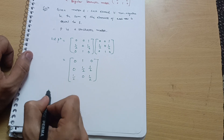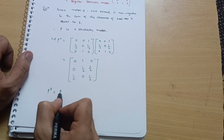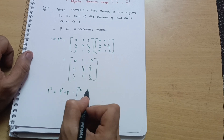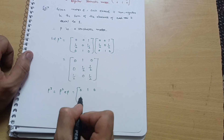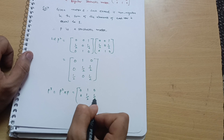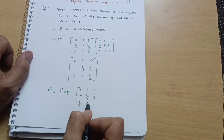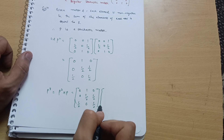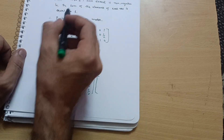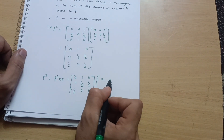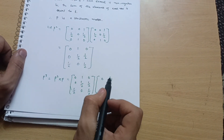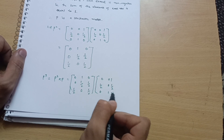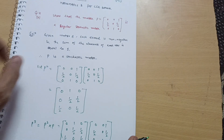Now calculate P³ = P² × P. P² is [[0,1,0],[0,1/2,1/2],[1/2,0,1/2]], and P (given in the question) is [[0,0,1],[1/2,0,1/2],[0,1,0]]. Multiply these two matrices to get P³.